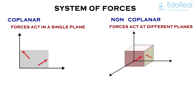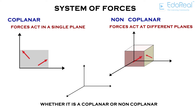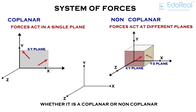But how would we decide whether it is a single plane or not? In order to decide whether it is coplanar or non-coplanar, we need to consider the forces on a three-dimensional axis — that is X, Y, and Z axis. In the example of coplanar, all the forces acting lie on a single plane, whereas in non-coplanar, they lie in different planes.